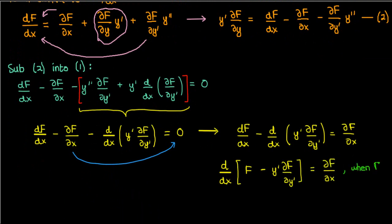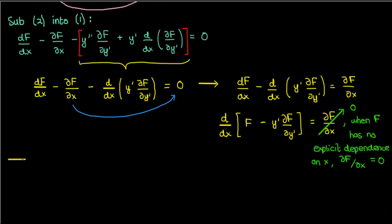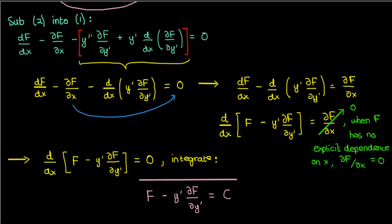Now when this capital F that was the integrand in our functional, when this capital F has no explicit dependence on x, then its partial with respect to x is just zero, as we said earlier. So if we integrate both sides with respect to x, we will end up with capital F minus y prime times partial capital F partial y prime equals our constant of integration C. And this equation is the Beltrami identity.